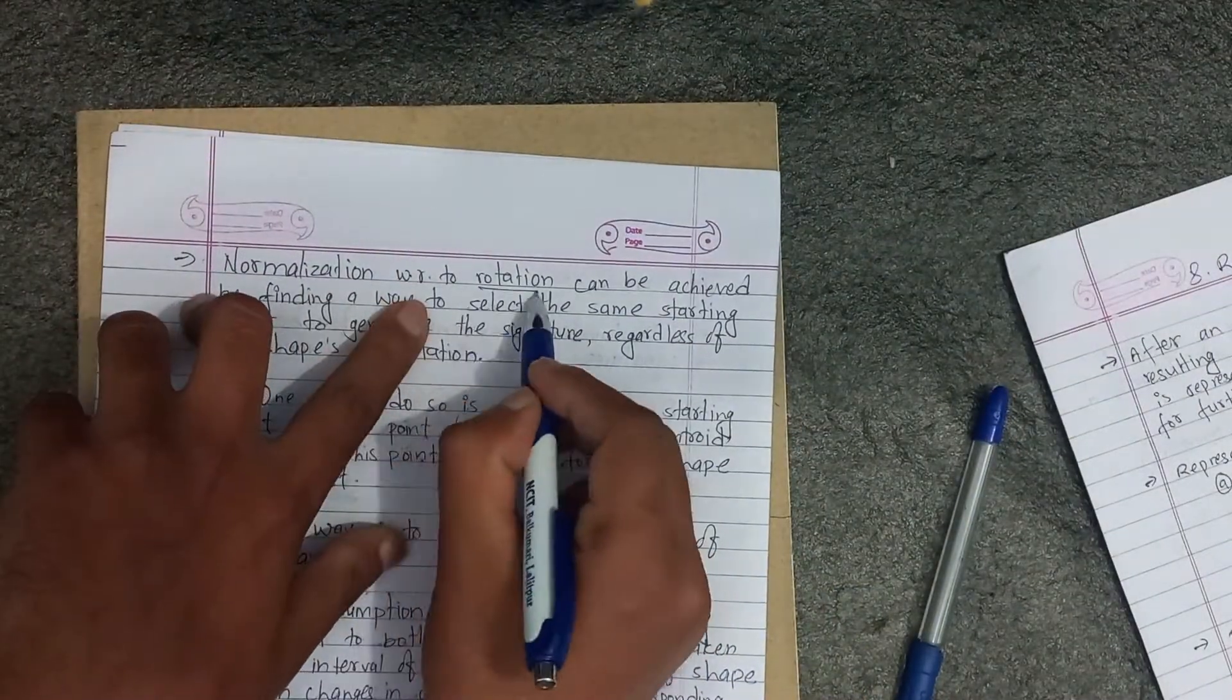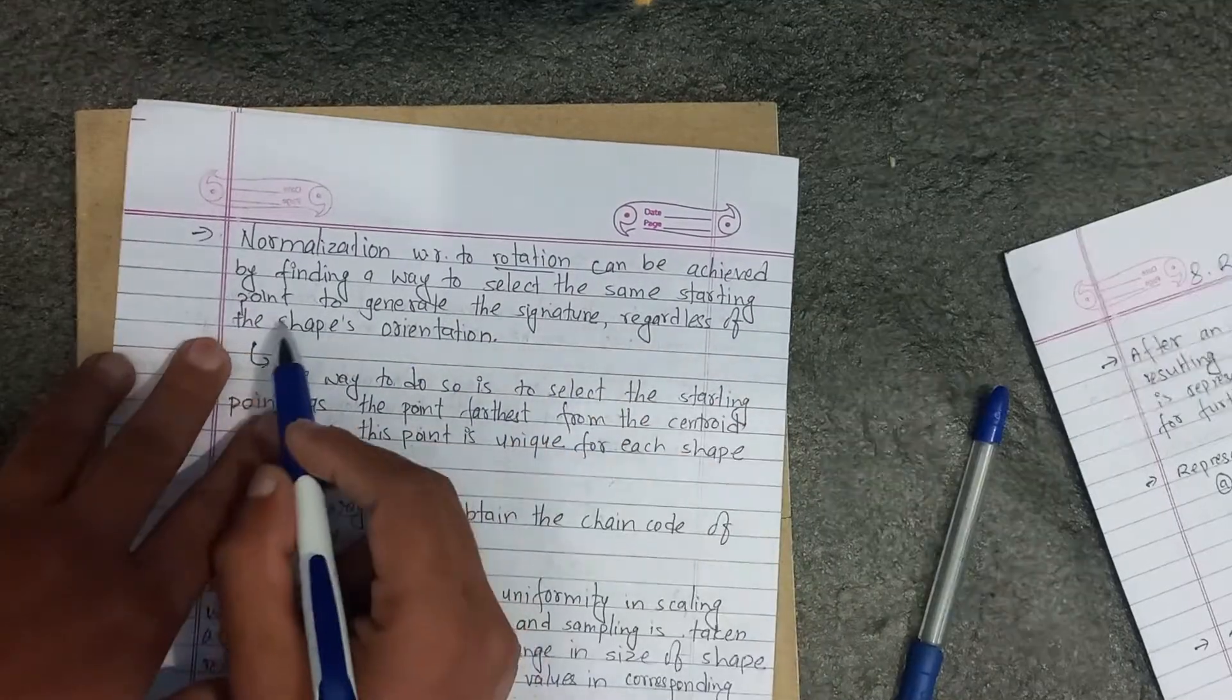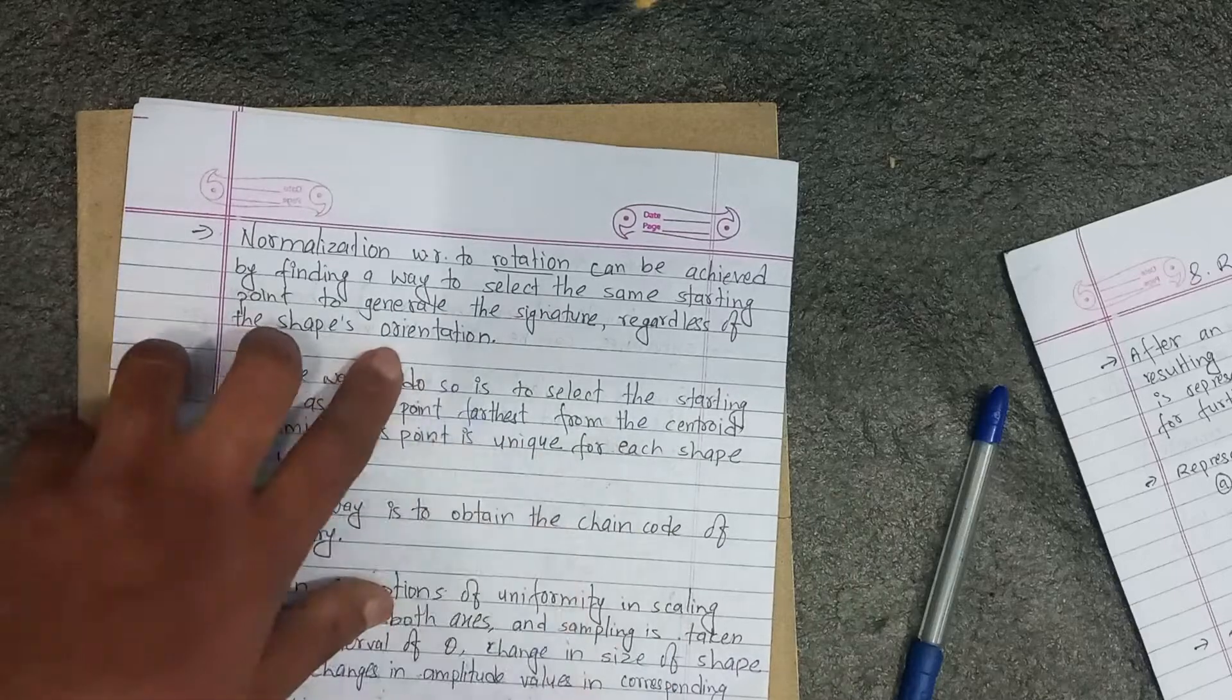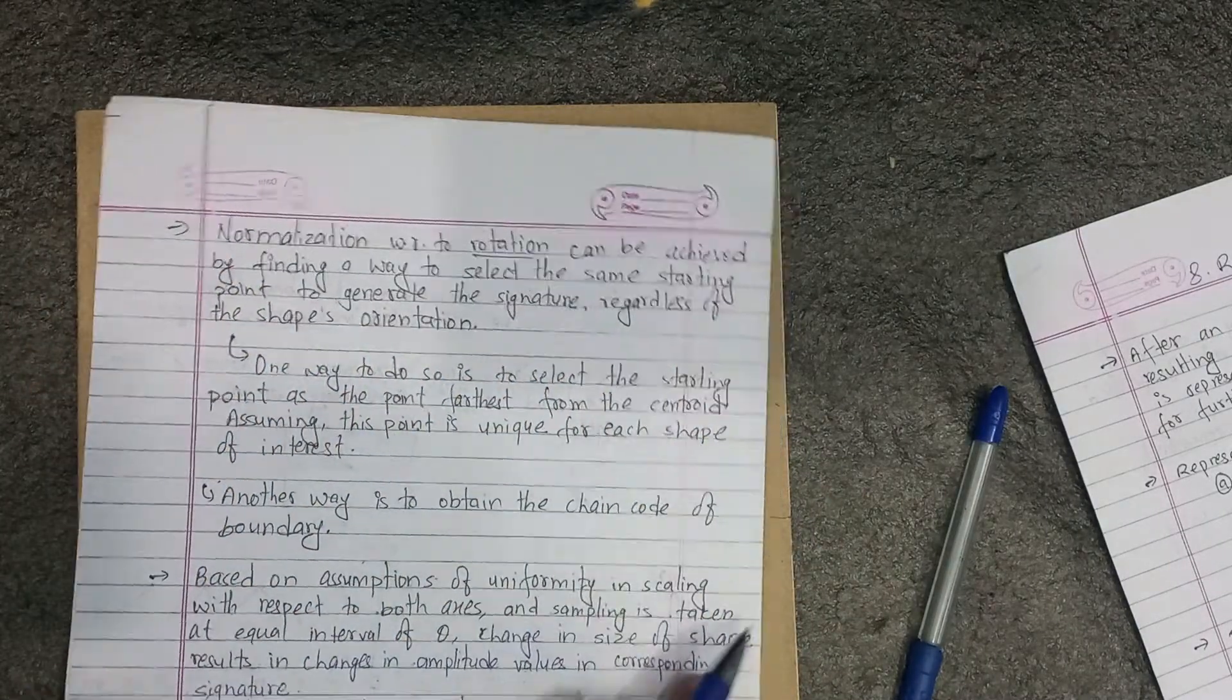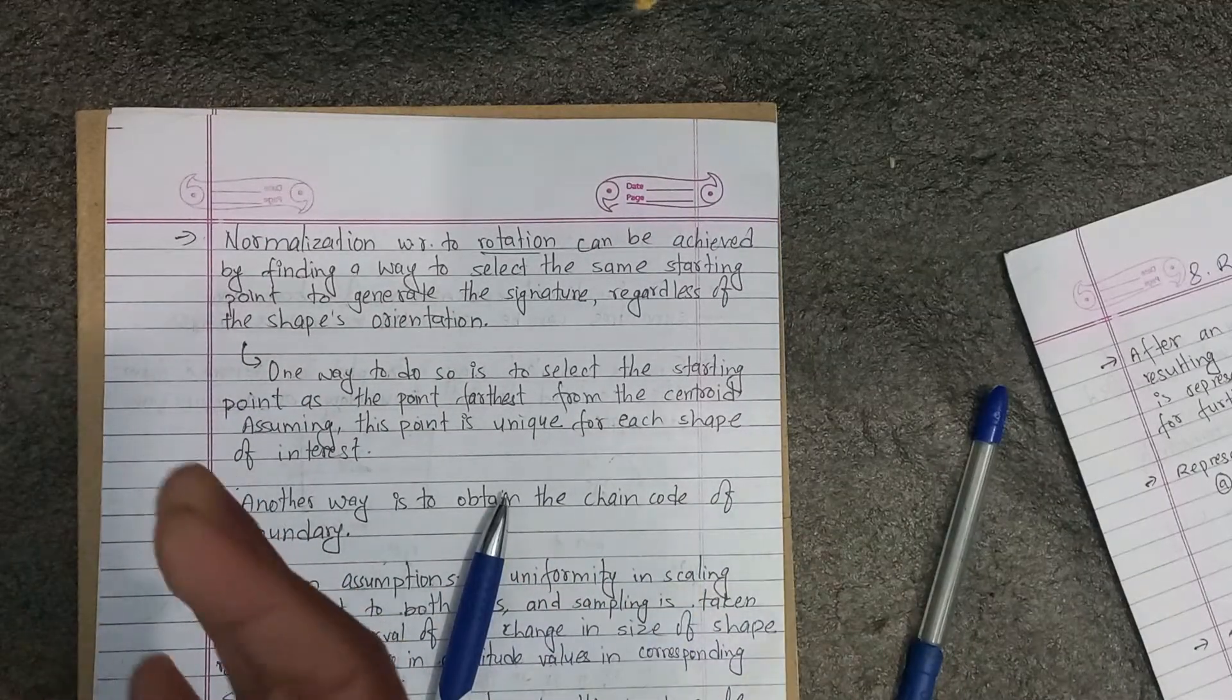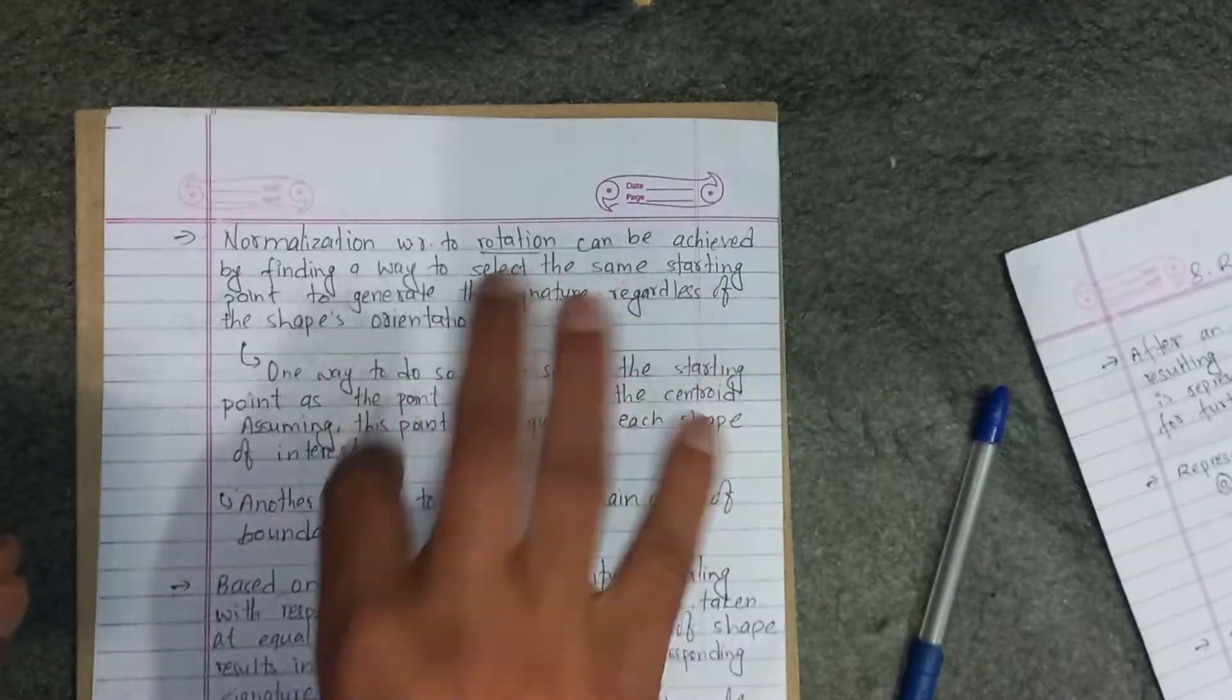Normalization with respect to rotation can be achieved by finding a way to select the same starting point to generate the signature regardless of shape orientation.